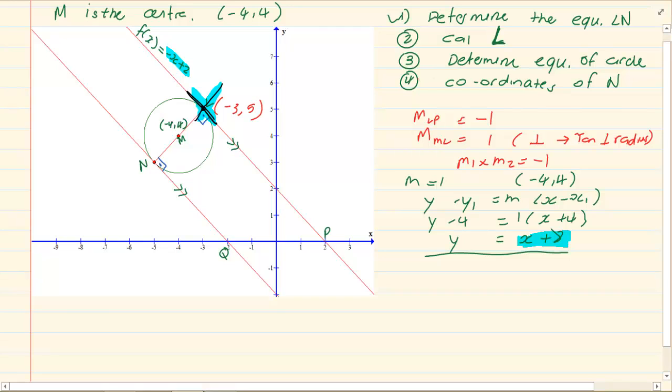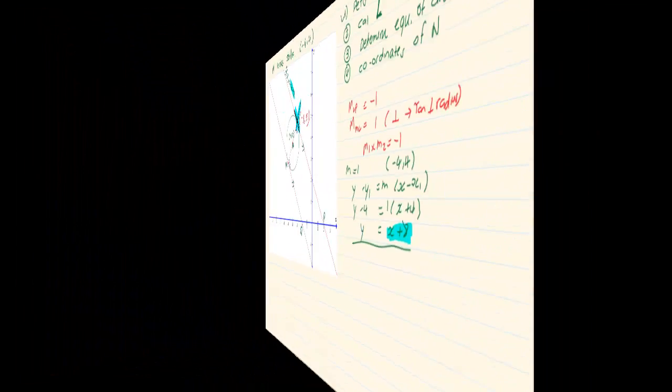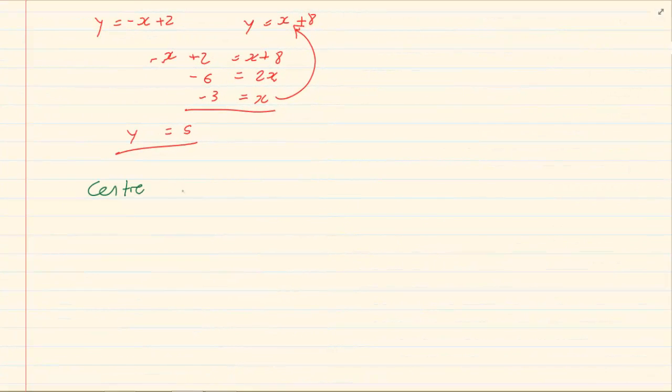Now the next one says determine the equation of the circle. Now to get the equation of the circle we need a center and a point. Our center is (-4, 4) and our point is (-3, 5). Right now we have a center and we have a point. Now the equation is (x - x1)² + (y - y1)² = r².